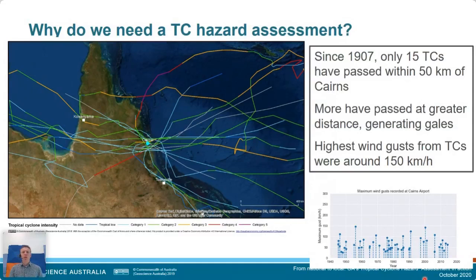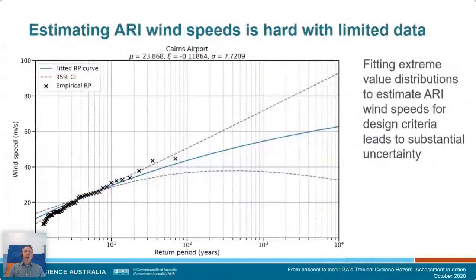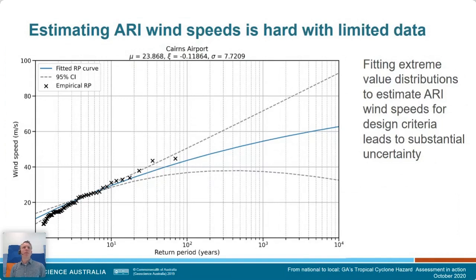Let's unpack the first question: what's the likelihood of Category 5 wind speeds in Cairns? If we look at the historical record of digitised wind speeds, we can fit an extreme value distribution — here we've used the generalised Pareto distribution — to those observations. There's a lot of uncertainty: even at the 1-in-100 year return period, the range in the 95% confidence interval is around 15 metres per second or 50 kilometres an hour. If we try to consider a Category 5 cyclone wind speed, around 75–77 metres per second, we're looking at a lower end limit of around 1-in-1,000 to 1-in-1,500 years — fairly low likelihood.